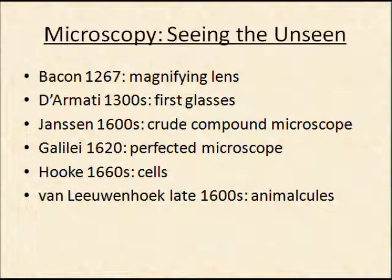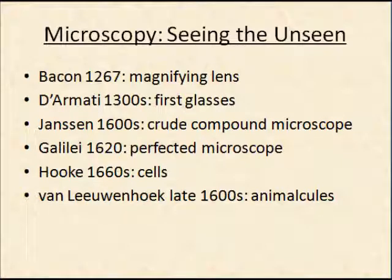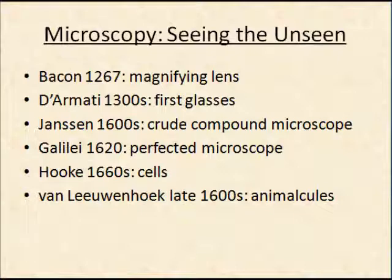Regarding microscopy, we talked about van Leeuwenhoek who used his microscope to draw and describe microorganisms for the first time, but things don't happen in a vacuum. He made a functional, usable microscope. However, prior to that we had magnifying glasses as early as 1267, then reading glasses in the 1300s. There was even a crude microscope by the early 1600s, and by 1620 Galileo had perfected a microscope of sorts. So van Leeuwenhoek made a microscope that worked very well, but there were predecessors.